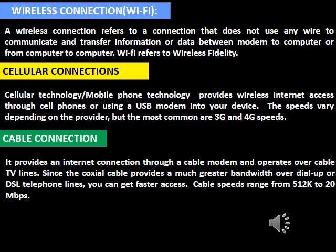Cellular connections use mobile phone technology to provide wireless internet access through cell phones or a USB modem. Speeds vary by provider, with the most common being 3G and 4G. A cable connection provides internet through a cable modem operating over cable TV lines. Since coaxial cable provides much greater bandwidth than dial-up and DSL telephone lines, you get faster access — cable speeds range from 512 Kbps to 20 Mbps.